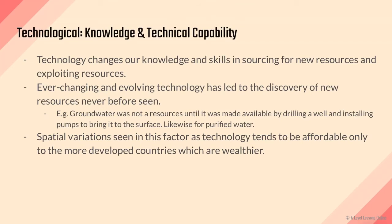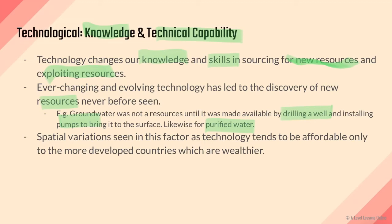Next are the technological factors, referring to knowledge and technical capability. Technology is ever-changing — it changes our knowledge and skills in sourcing and exploiting new resources. With advancements in technology we can find new, more capable resources, leading to new areas of appraisal. For example, groundwater was never a resource until made available by the drilling of wells and installing pumps to bring it to the surface. Likewise, purified water and clean water were only made possible with technology — without it, these would not have had such a value-added appraisal.